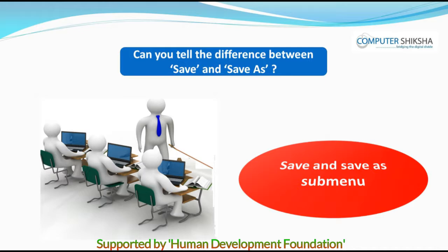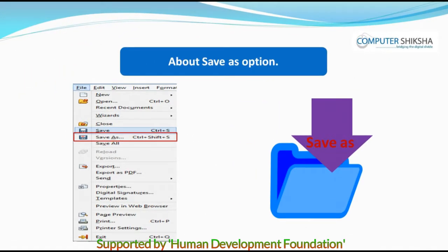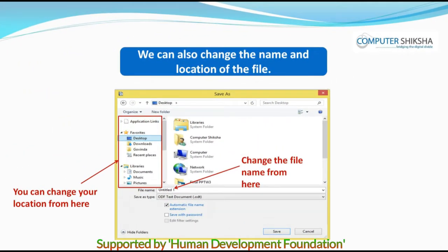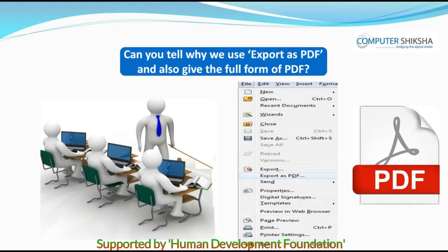Can you tell the difference between Save and Save As? By using Save, we can save our files on the computer at any location and with any name that we may want to give our file. When required, we can later open our file and see it. Using the Save As option, we can see our saved file's name and location and if we like, we can change both the name and the location. Can you tell why we use Export as PDF and also give the full form of PDF?